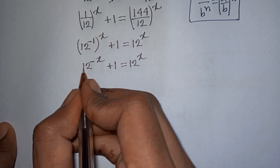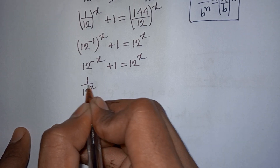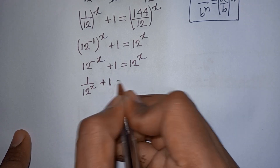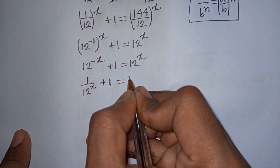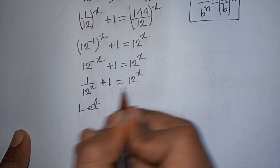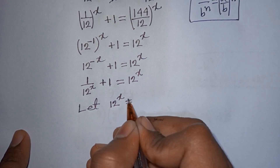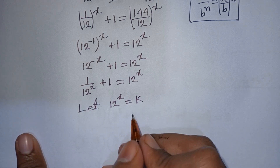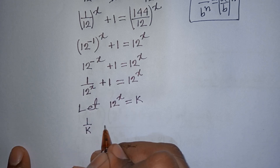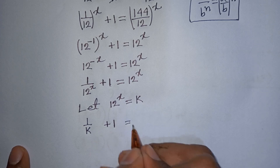Now, 12^(−x) is the same as 1 over 12^x. So the equation becomes 1/k plus 1 equals k, where we let k equal 12^x.